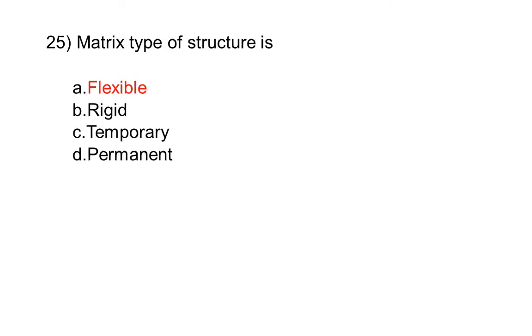Matrix type of structure is: option A flexible, option B rigid, option C temporary, option D permanent. The correct answer is option A, flexible.